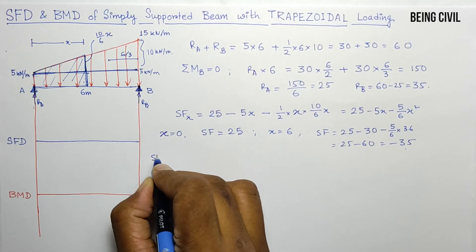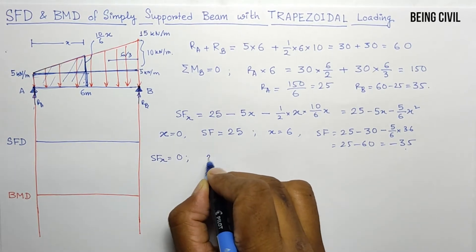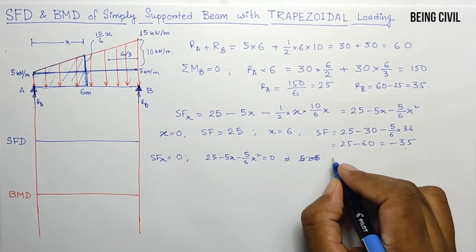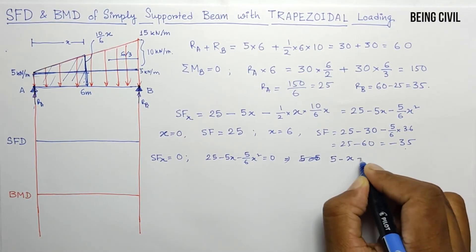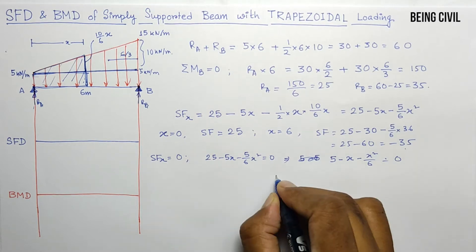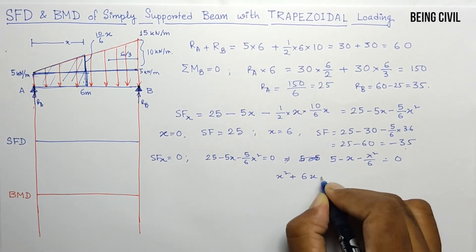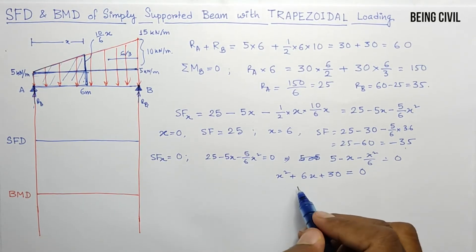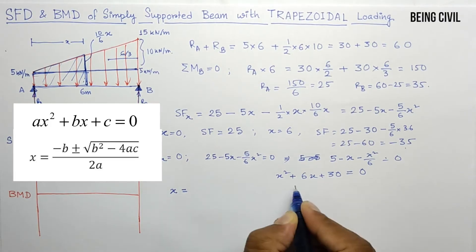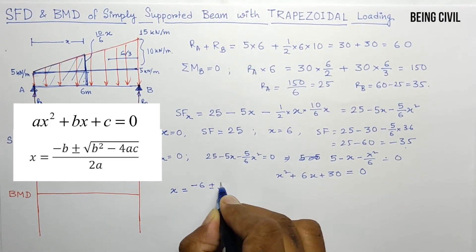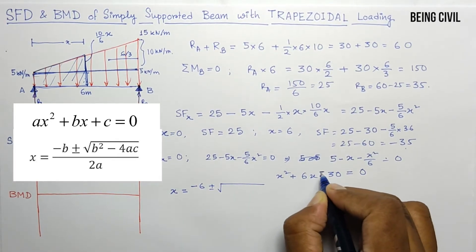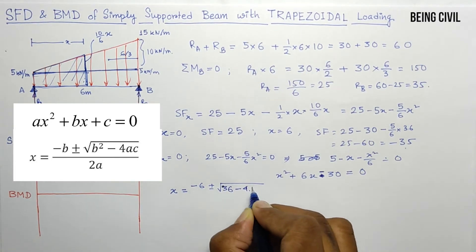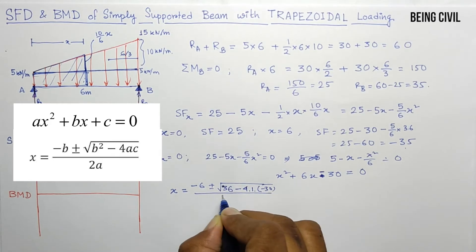To find the position where shear force equals zero, we equate the equation to zero: 25 − 5x − (5/6)x² = 0. Dividing by 5: 5 − x − x²/6 = 0, or x² + 6x − 30 = 0. Solving this quadratic using the formula: x = (−6 ± √(36 + 120)) / 2.